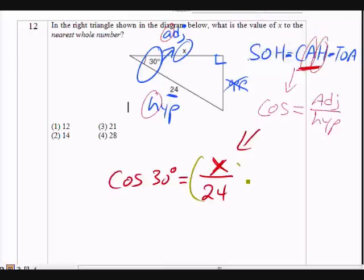So what I'm going to do is multiply by 24 on both sides. This way the 24 will cancel on the right. We're left with x equals 24 times cosine 30 degrees.